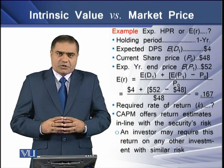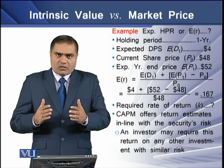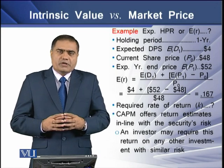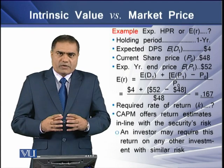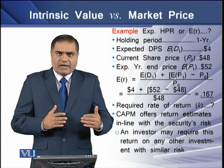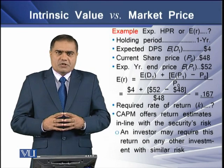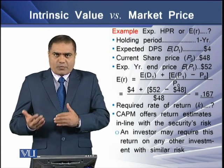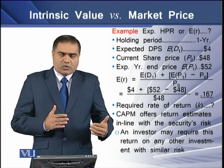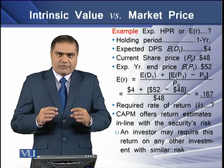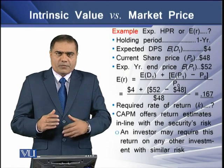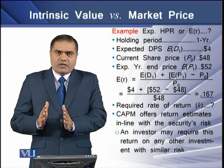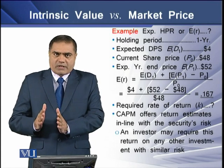To determine the expected return on this one-period investment, we need two components. The first is the expected dividend and the second is the capital gain. To determine the capital gain, we deduct the opening price from the closing price, and the difference is divided over the opening price — that gives us the capital gain value.